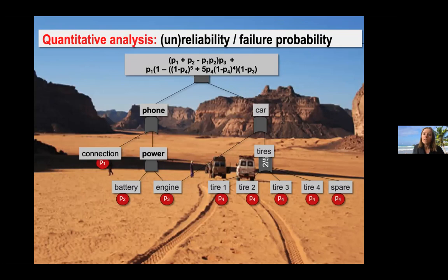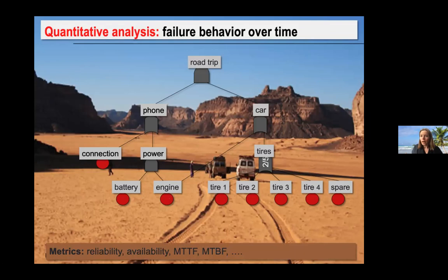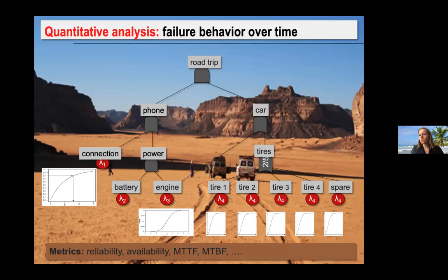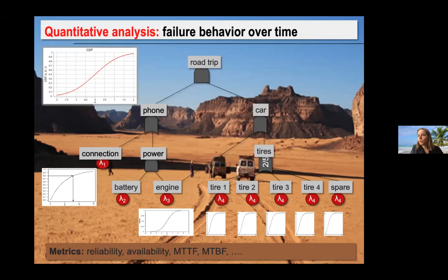For quantitative analysis you predict the failure probability by assigning probabilities to the basic events — for instance, what's the probability that your connection fails in a given year. You then compute the overall probability of being stranded. It's a complex expression, but software can do those computations. More commonly you consider failure behavior over time: you assign continuous probability distributions, see how failure probability evolves, and when you see a sharp increase you know it's time to do maintenance.